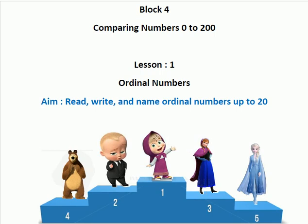Here you can see our favorite characters: Bear and Masha, Bo's baby, Anna and Elsa. Just imagine they participated in a running race. Can you tell me who is in the first position? Masha is in the first position, Bo's baby is in the second position, Anna is in the third position, Bear is in the fourth position and Elsa is in the fifth position.